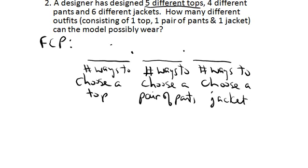Well, there are five different tops, so there are five different ways to choose a top. There are four different pants, so there are four ways to do that. And there are six different jackets, so there are six different ways to do that. An outfit consists of one of each of those. So, by the fundamental counting principle, there are five times four times six different ways.